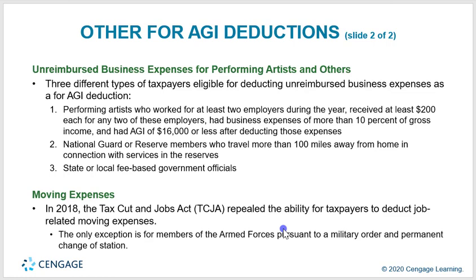Three types of taxpayers are eligible for deducting unreimbursed business expenses as an above-the-line deduction: a performing artist who worked for at least two employers during the year, received at least $200 from each, had business expenses exceeding 10% of gross income, and had AGI of $16,000 or less after deducting these expenses; a National Guard or Reserve member who travels more than 100 miles from home in connection with reserve service; and a state or local fee-based government official. In 2018, the Tax Cuts and Jobs Act repealed job-related moving expense deductions for most taxpayers, with the only exception being members of the armed forces pursuant to a military order and permanent change of station.